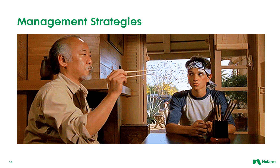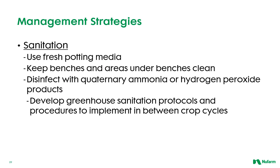Management strategies for controlling fungus gnats and shore flies in a greenhouse will necessarily require an integrated pest management approach. The first key is implementing thorough sanitation practices, which should include using fresh potting media and new containers. Or, if used containers are implemented, the containers should be clean and sanitized. Benches and areas under the benches need to be kept clean of debris, weeds and algae, and should be disinfected with quaternary ammonia or hydrogen peroxide products in between crops. Sanitation protocols should be built into the planting calendar in between crops.